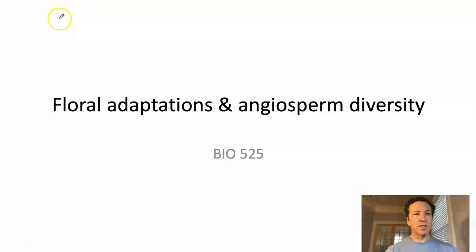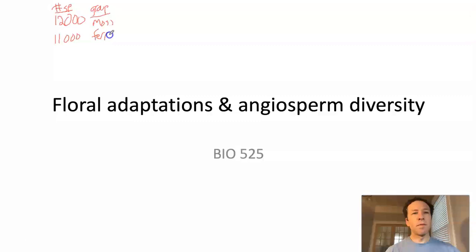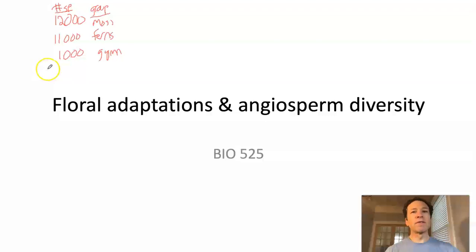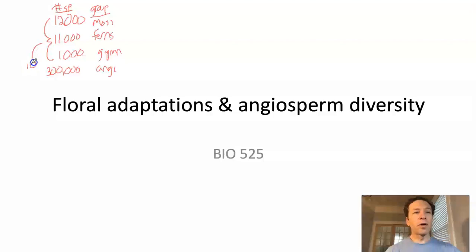Let's compare angiosperms to some other groups. If we think back to the mosses, there are around 12,000 species. For ferns it's a little bit less, around 11,000 species. Gymnosperms have around 1,000 species. And angiosperms have somewhere between 250,000 and 400,000 species — let's put the ballpark number at 300,000. This means that angiosperms are in the ballpark of an order of magnitude — 10 times — more diverse than all of those other plant groups put together.